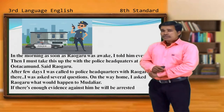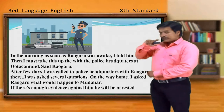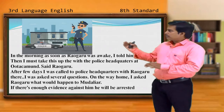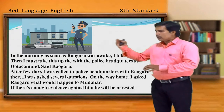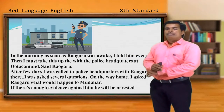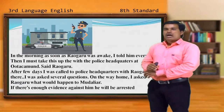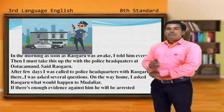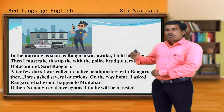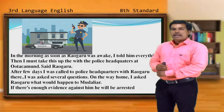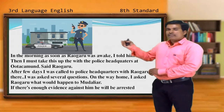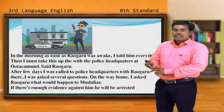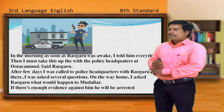Immediately in the morning, as soon as Ravgaru was awake, she told him everything — the 10% amount Mudaliar was taking for the sandalwood trees being cut down. Ravgaru said: I must take this to the police headquarters at Utukamandu. After a few days she was called to the police headquarters with Ravgaru and several questions were asked. On the way home she asked about Mudaliar, and Ravgaru said he had committed a crime and would obviously be arrested.